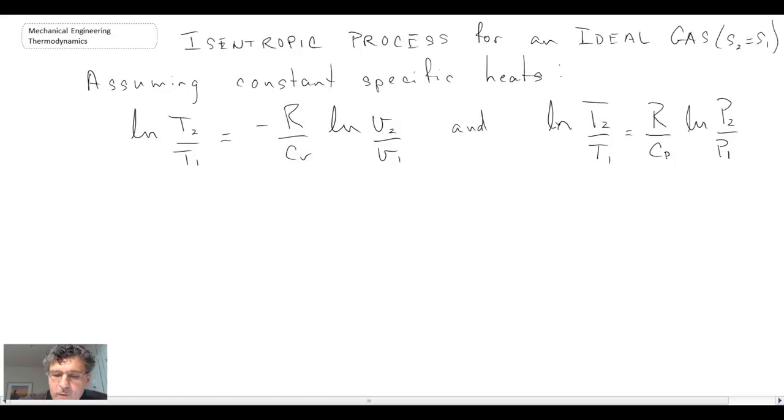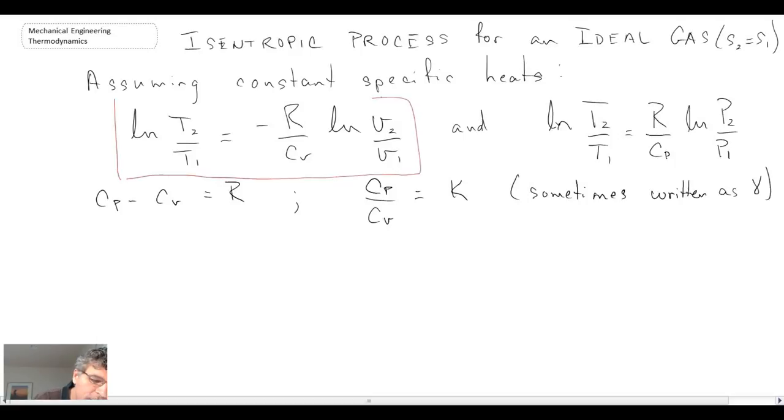Okay, so we obtain those two relationships for an isentropic process. We know a couple of other things. We know the relationship between the ideal gas constant R and CP and CV. And we also know that the ratio of specific heats we said was equal to K. And I also said that sometimes this is written as gamma, and that's usually in fluid mechanics or gas dynamics. You'll see gamma instead of K used there. So with that, what we can do is we can take our two equations that result from the entropy changes and we can rearrange and introduce the ratio of specific heats and CP minus CV to obtain the following expressions.